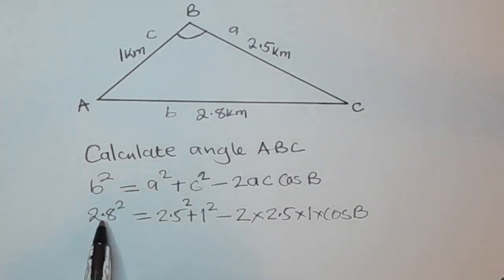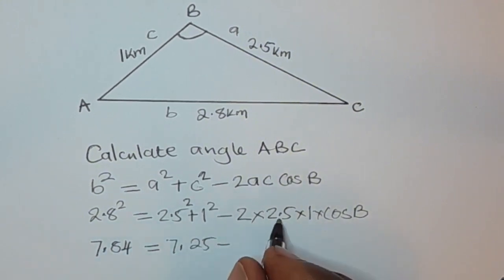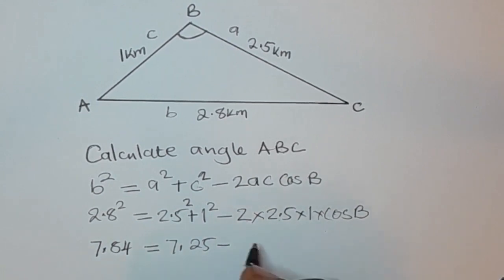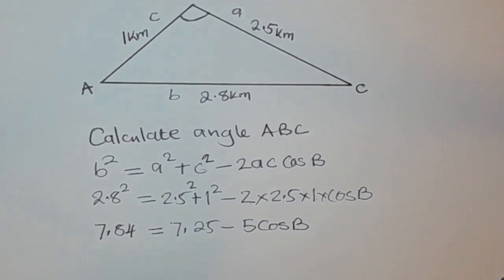Okay, when you square this on a calculator you are going to have 7.84 is equal to, when you square 2.5 then plus 1 you are going to have 7.25, then minus 2 times 2.5 is 5 times 1 is 5 times cos B. So you have 5 cos B.